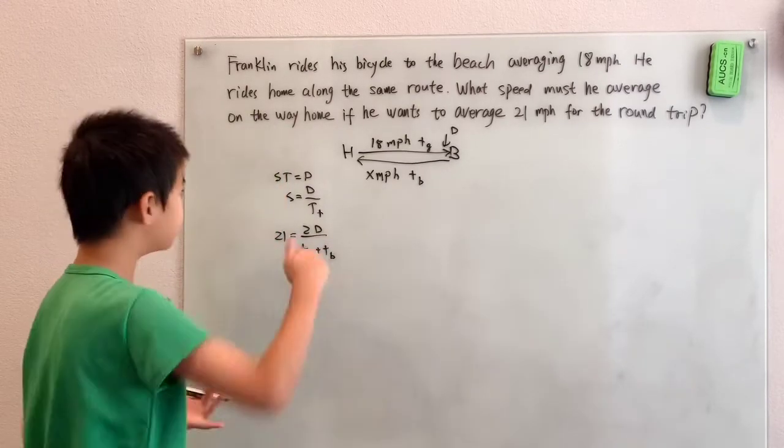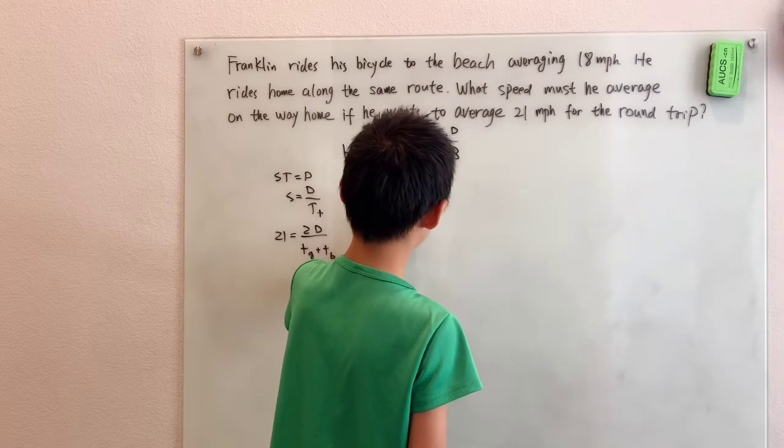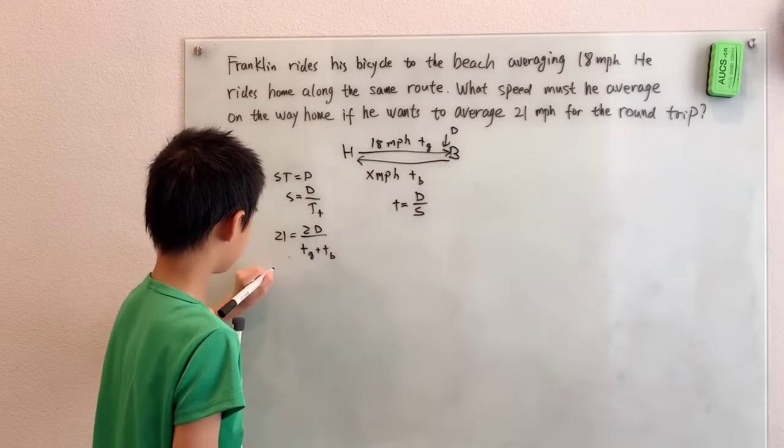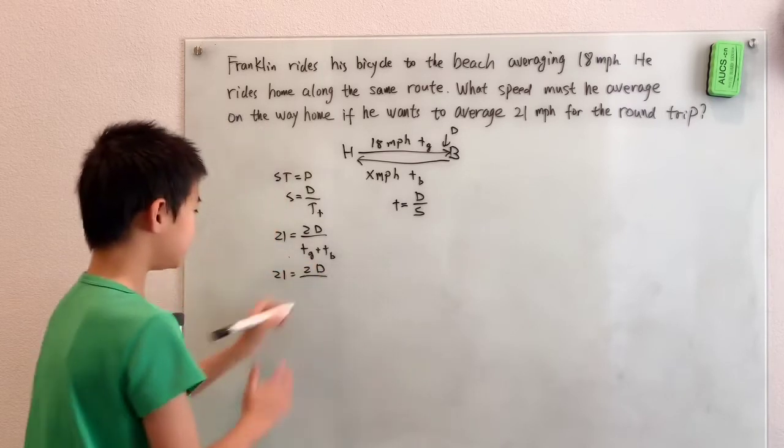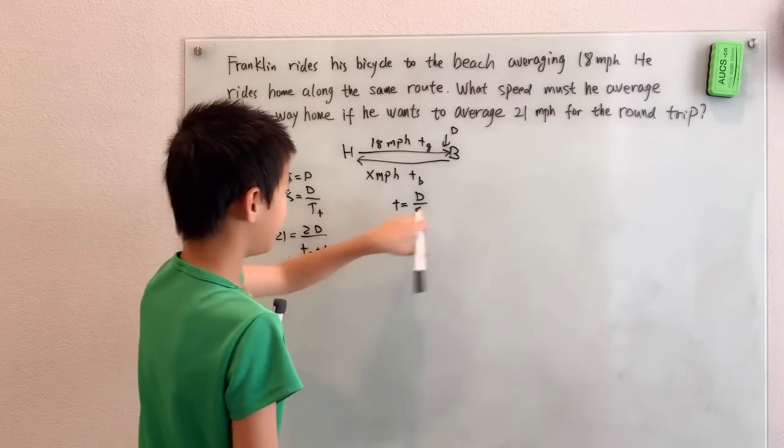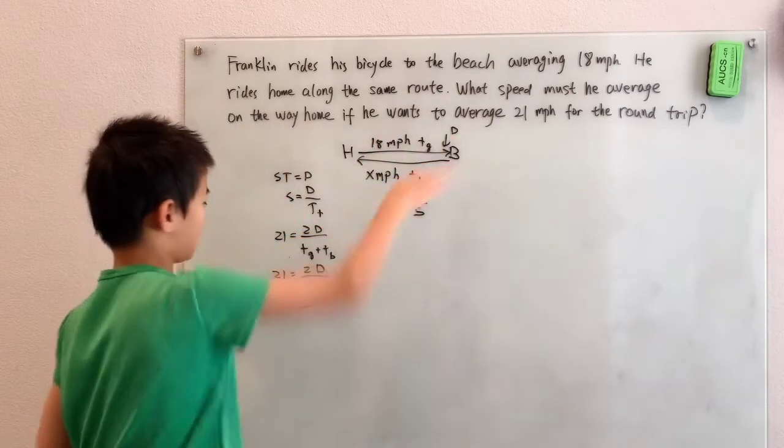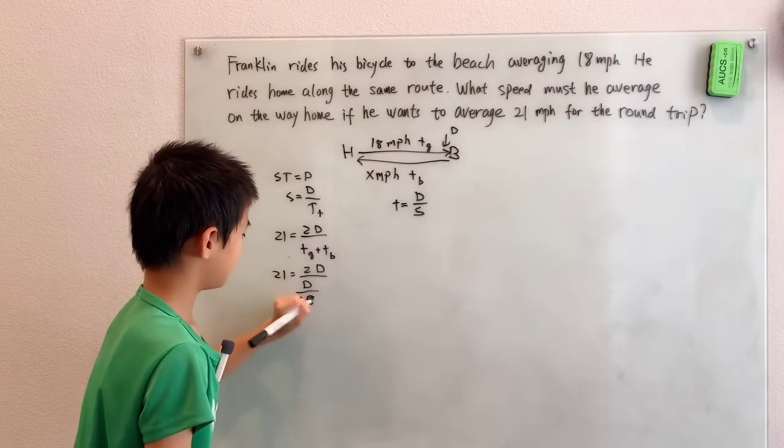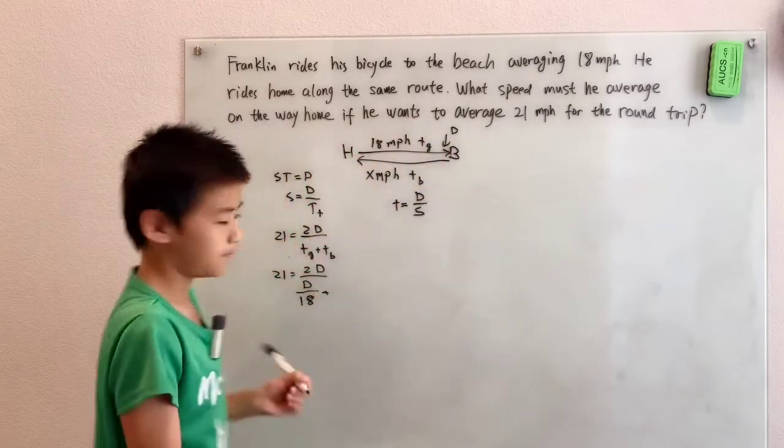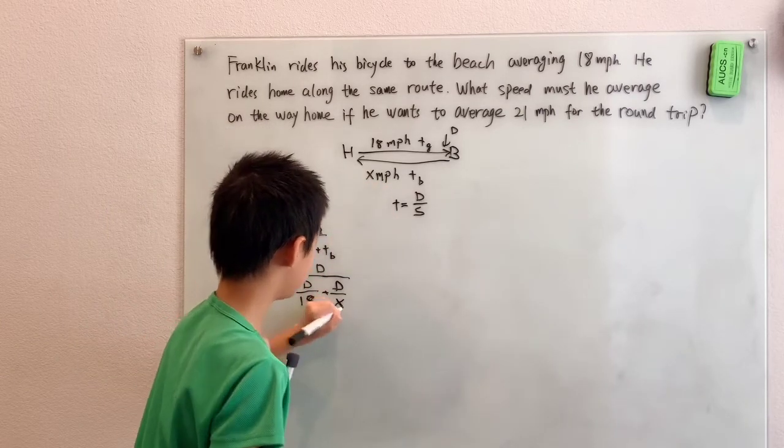And the reason we're doing this is now we can substitute even farther since we have some times which time is distance over speed. We can use the distance and the speed. Since 21 equals 2D over, Tg is distance D divided by the speed which is 18 miles per hour going to the beach. And then we add on TB, D over the speed coming back, which we know is x miles per hour.